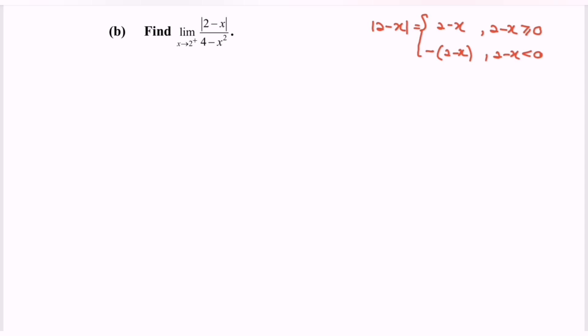So rewrite the situation where we will have the modulus of 2 minus x is equal to 2 minus x, domain x less than or equals to 2. Negative bracket 2 minus x, the domain will be x greater than 2.